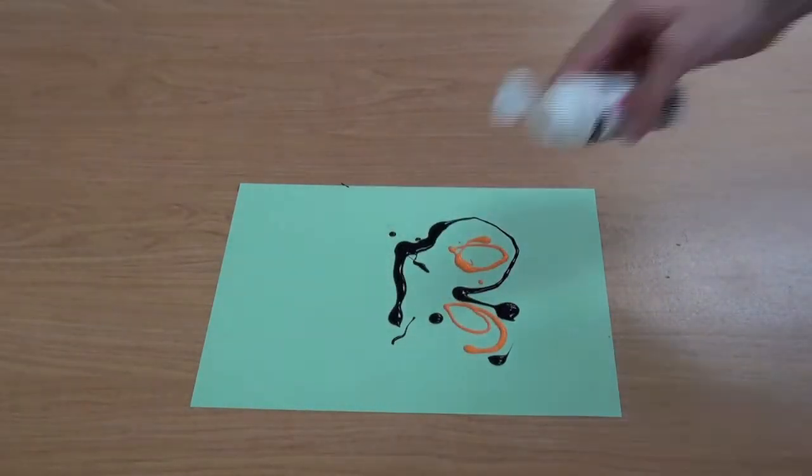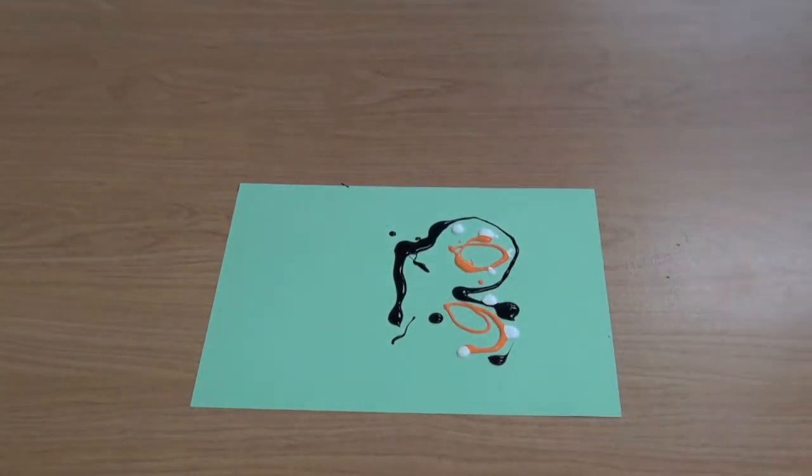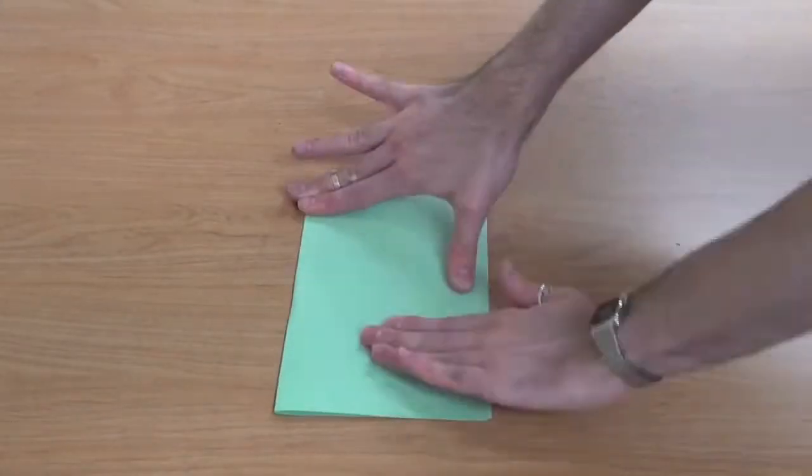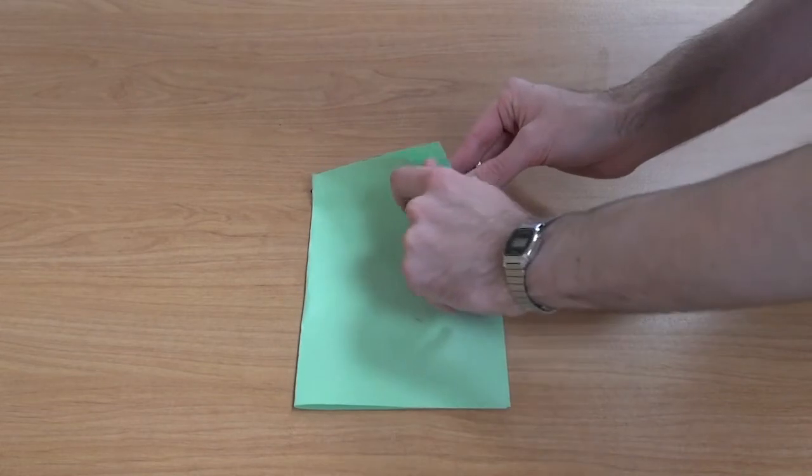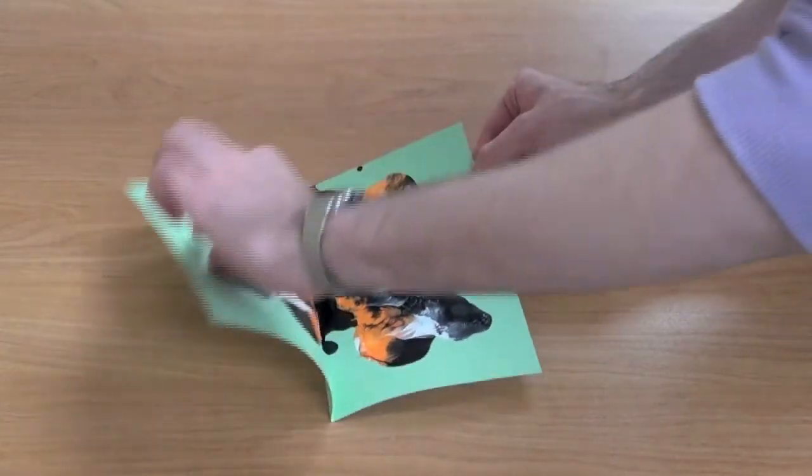For our last one, we're just going to do some abstract colors. We're going to fold it in half, spread to the corners, and reveal what's inside.